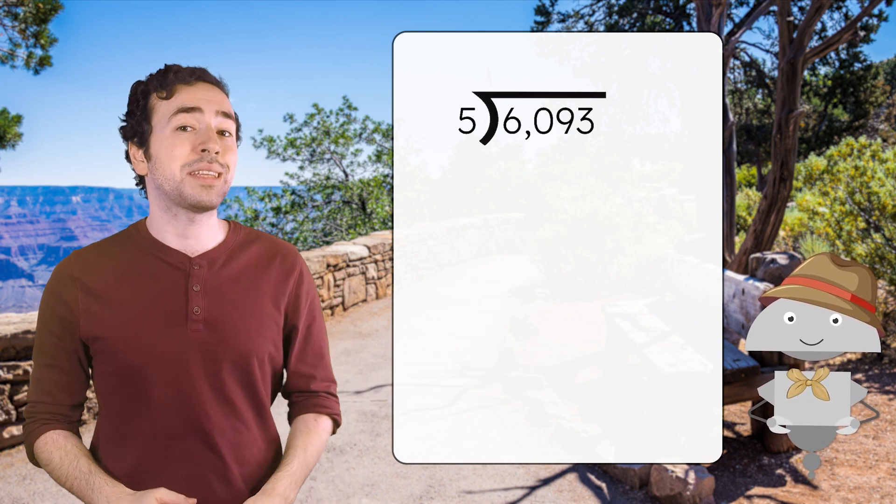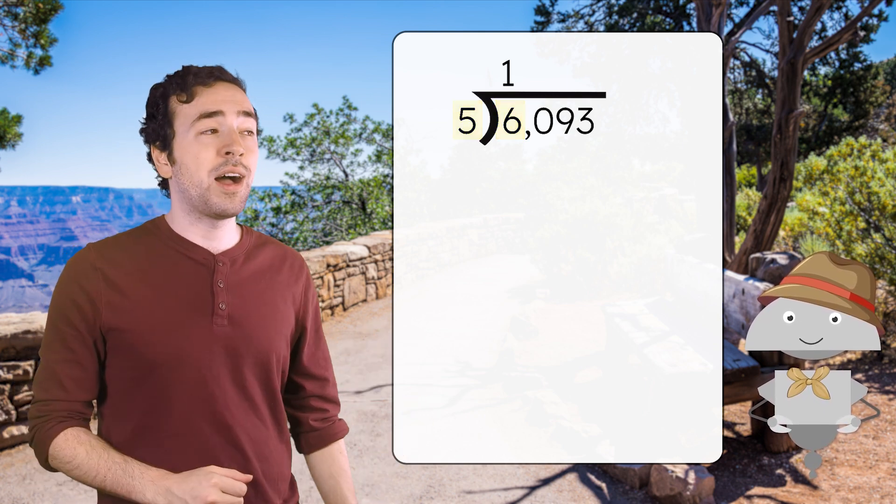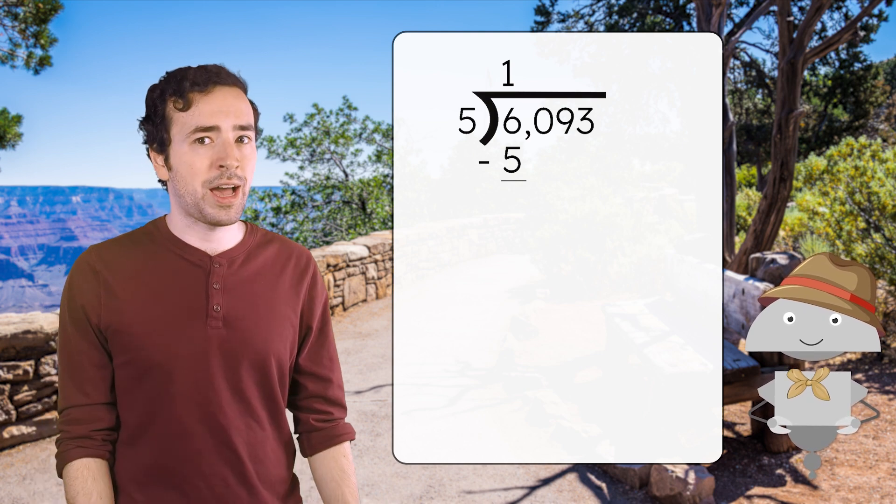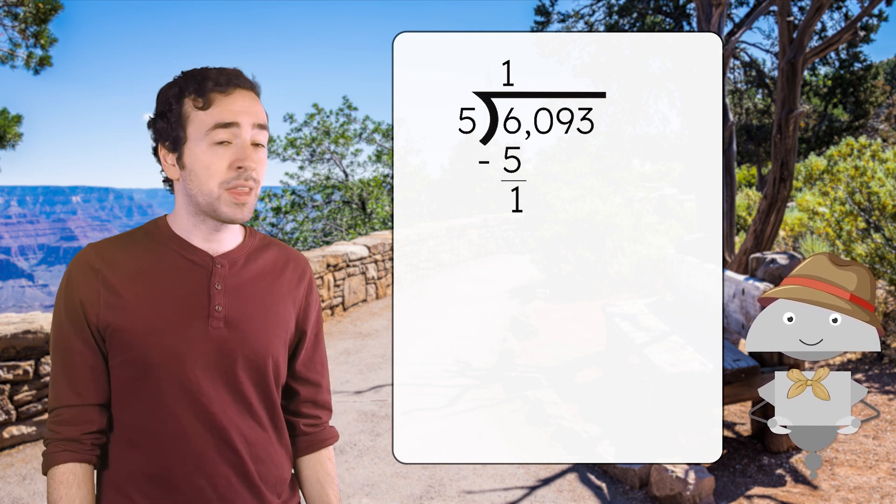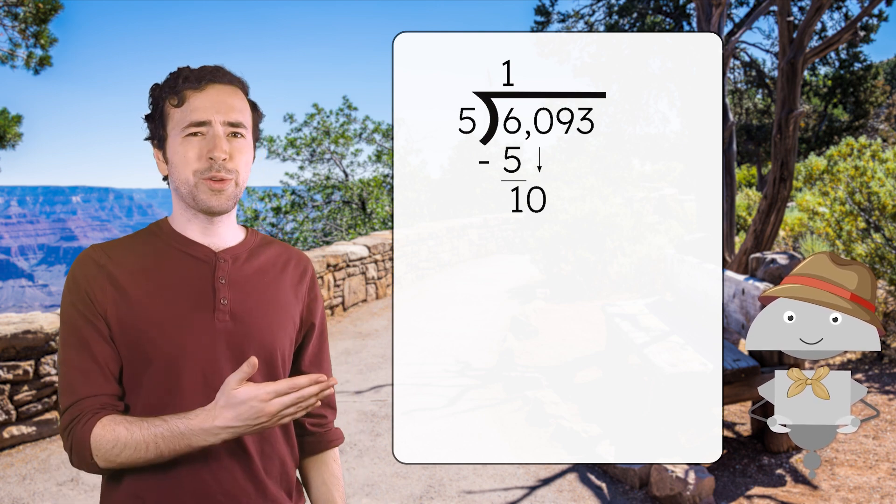First, we'll check how many times five fits into six. It fits once. One times five equals five, and we'll subtract six minus five. That equals one. Then we bring down the next digit of the quotient, which is zero.